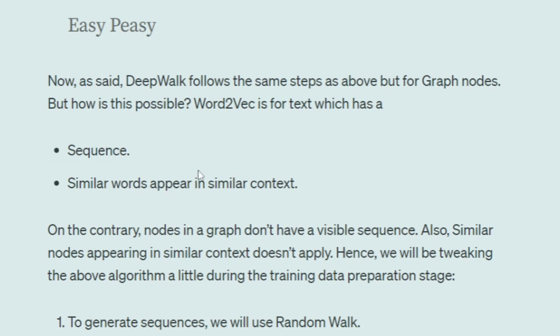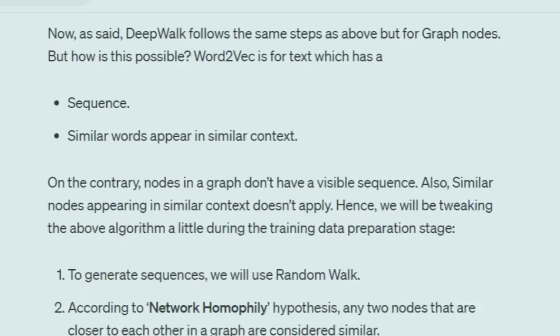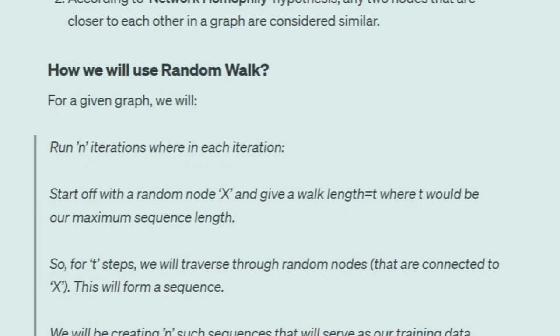The question is: does the theory that 'similar words appear in similar context' apply to graphs also? Nodes in a graph don't have a visible sequence, but you can get a sequence. Also, 'similar nodes appear in similar context' doesn't directly apply. However, according to the network homophily hypothesis, any two nodes that are close to each other are considered similar. We'll generate sequences using the random walk algorithm.